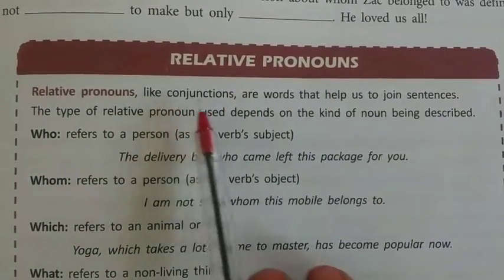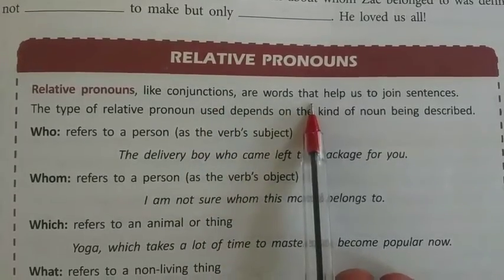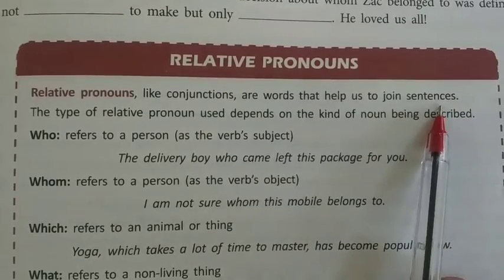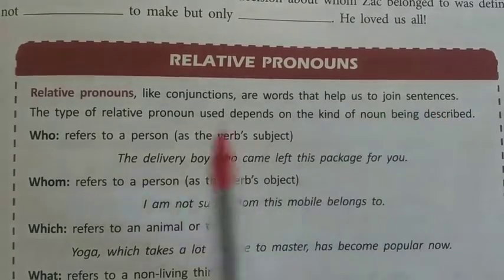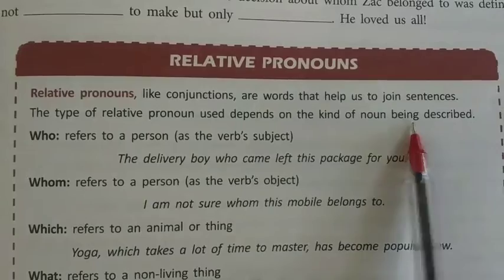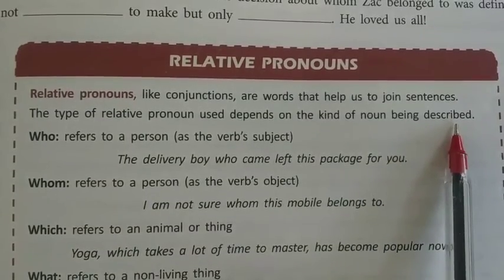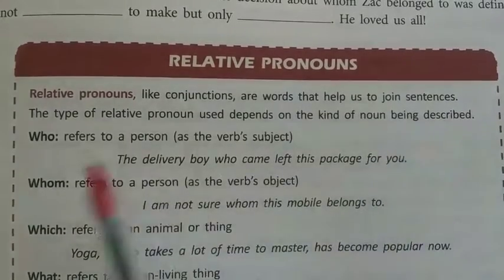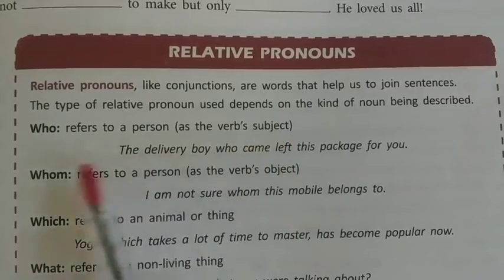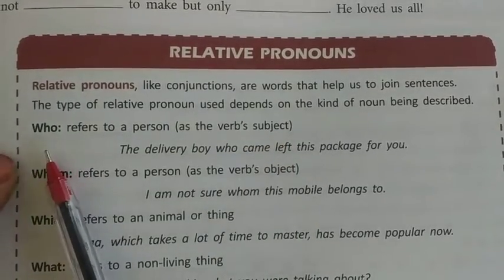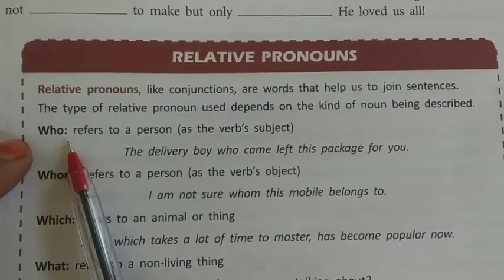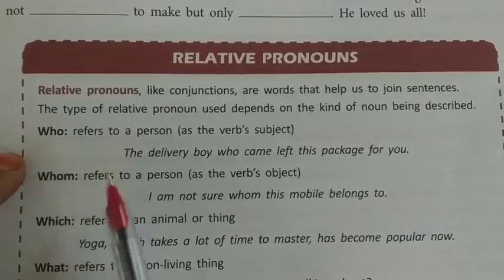Relative pronouns. Relative pronouns, like conjunctions, are words that help us join sentences. The type of relative pronoun used depends on the kind of noun being described. 'Who' refers to a person as the verb subject. जब हम 'who' को relative pronoun के रूप में use करते हैं, तो इसका अर्थ होता है 'जो' या 'जिसका'।